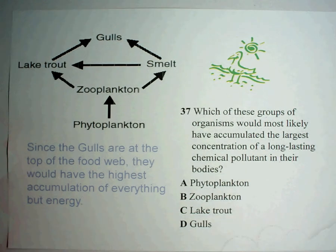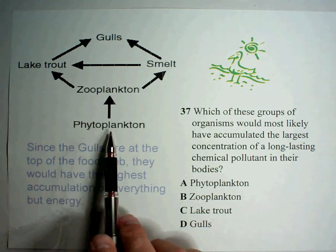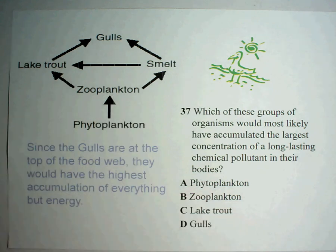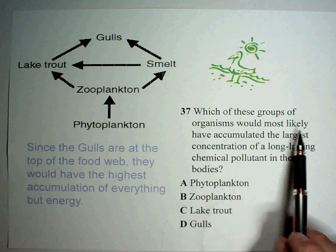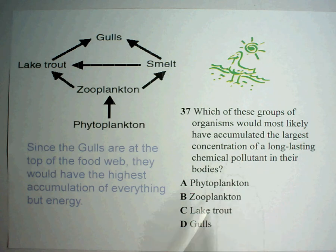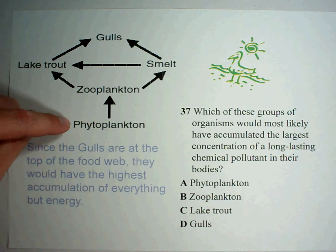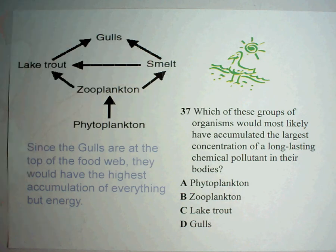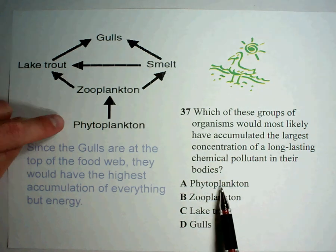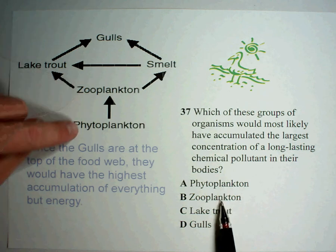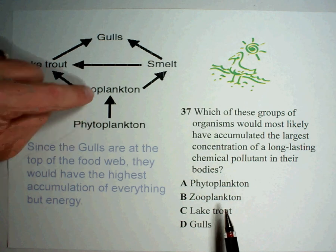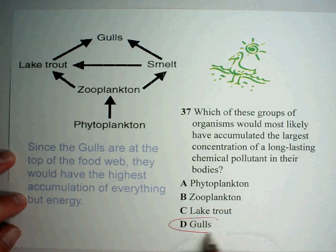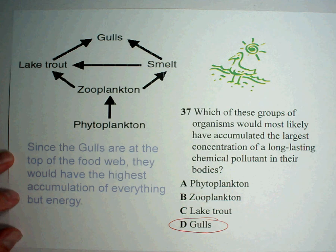Here's one more example, also from a standardized test. Since plants are at the bottom, phytoplankton must be a plant, then zooplankton, then smelt and lake trout. The question asks which group of organisms would most likely have accumulated the largest concentration of a long-lasting chemical pollutant. If there's something in the water, the phytoplankton get some of it; zooplankton get it from phytoplankton; lake trout get it through zooplankton. But gulls get it from multiple directions — that's why gulls are the best answer. They accumulate the largest concentration because of where they're located within the food web.